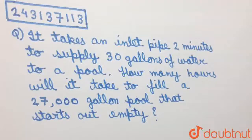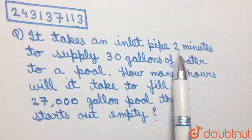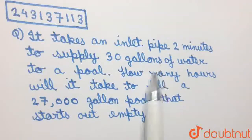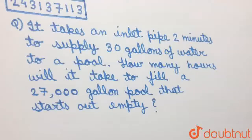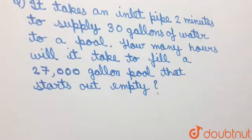So, as per this question, a particular inlet pipe takes 2 minutes to supply 30 gallons of water, and we are required to find the time that the same inlet pipe will take to fill 27,000 gallons. This question can be solved using the unitary method.